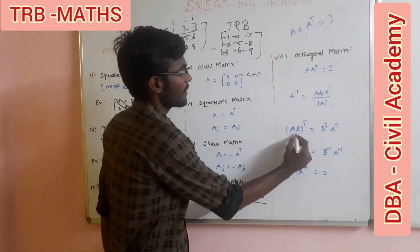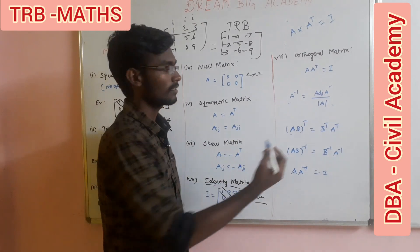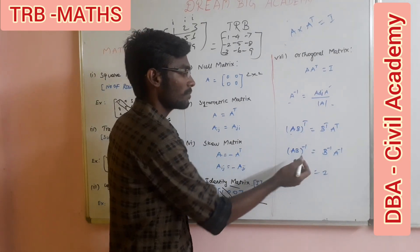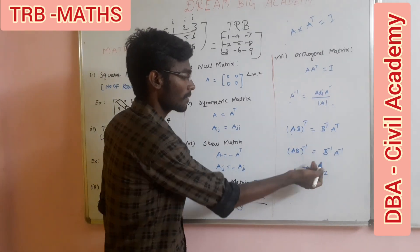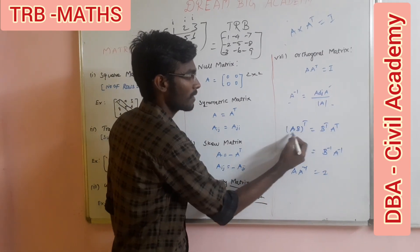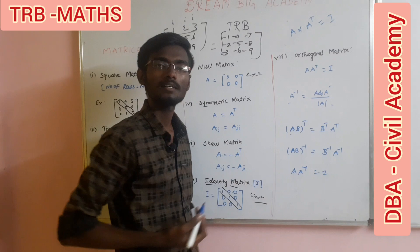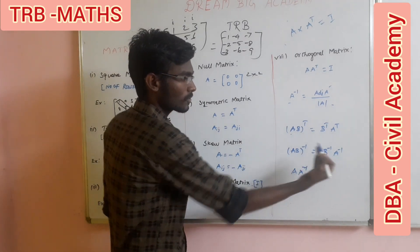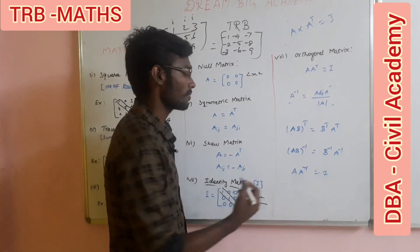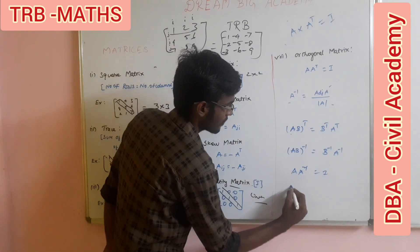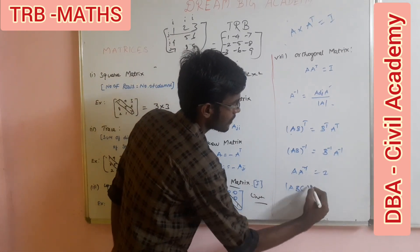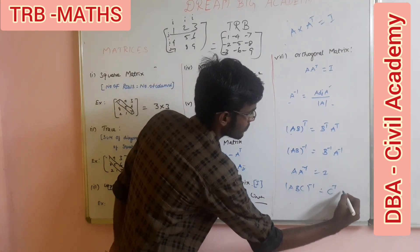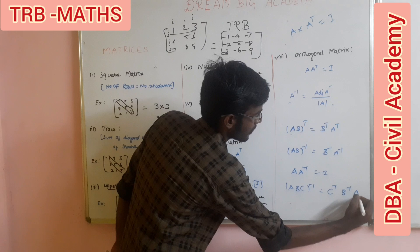The properties are: (AB) transpose equals B transpose times A transpose. If you take the inverse of AB, it equals B inverse times A inverse. Similarly, (ABC) inverse equals C inverse times B inverse times A inverse.